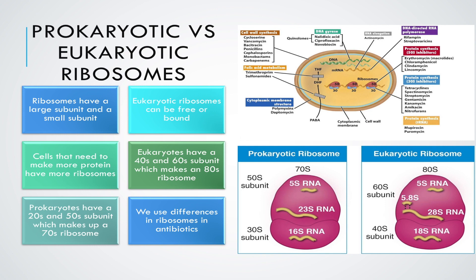Prokaryotes have a 30s subunit and a 50s subunit which eventually makes up a 70s ribosome. Therefore our ribosomes, as you can see, are different from prokaryotic ribosomes.